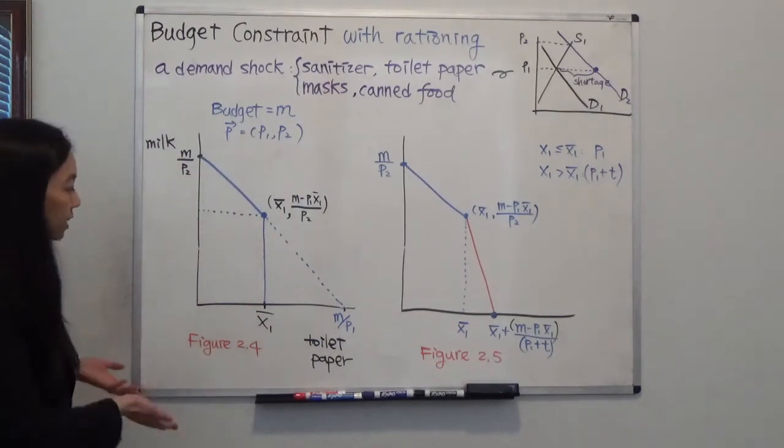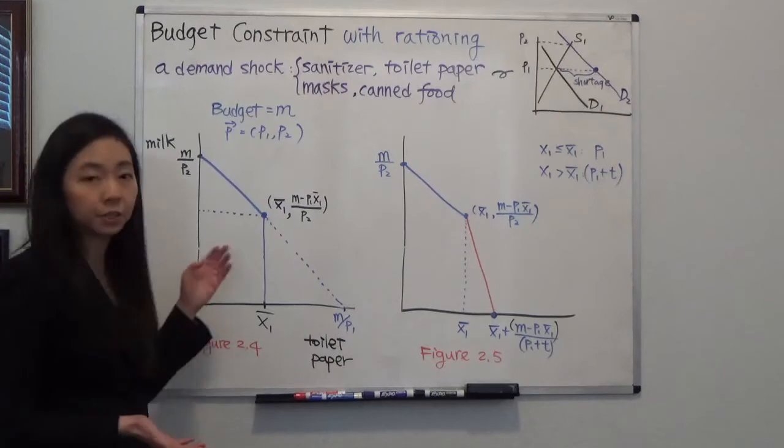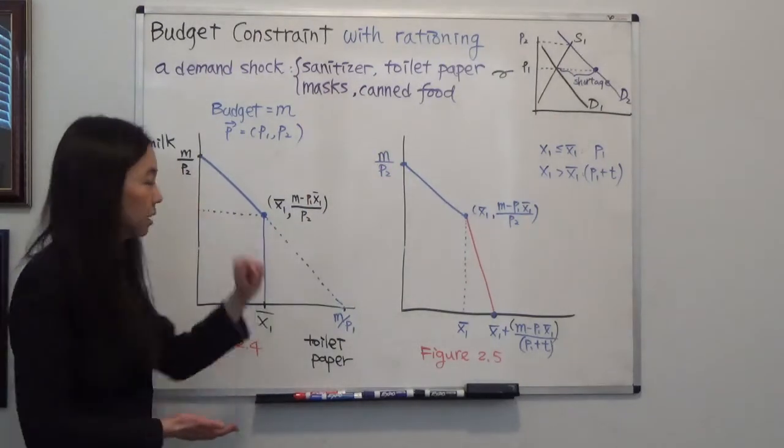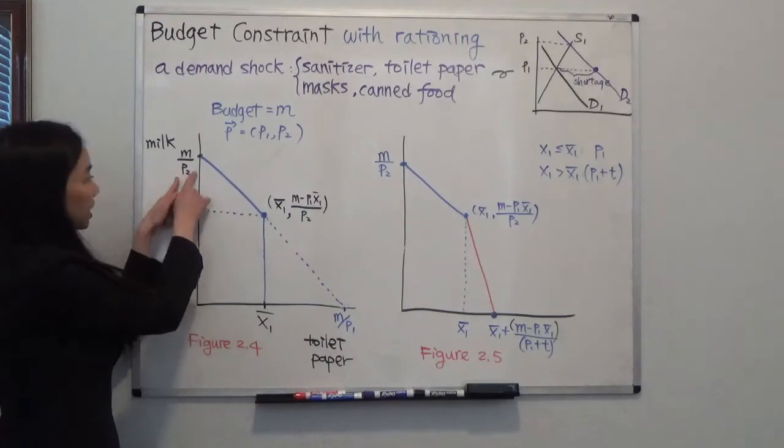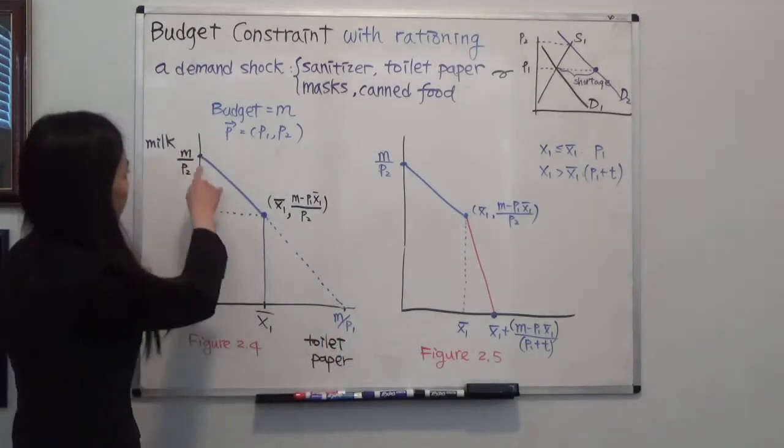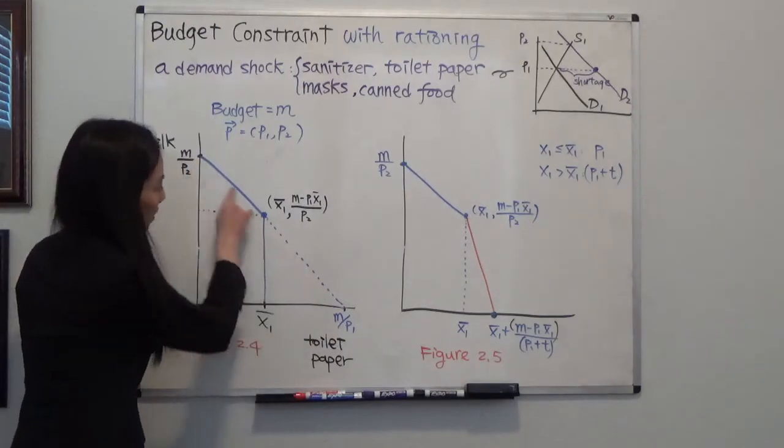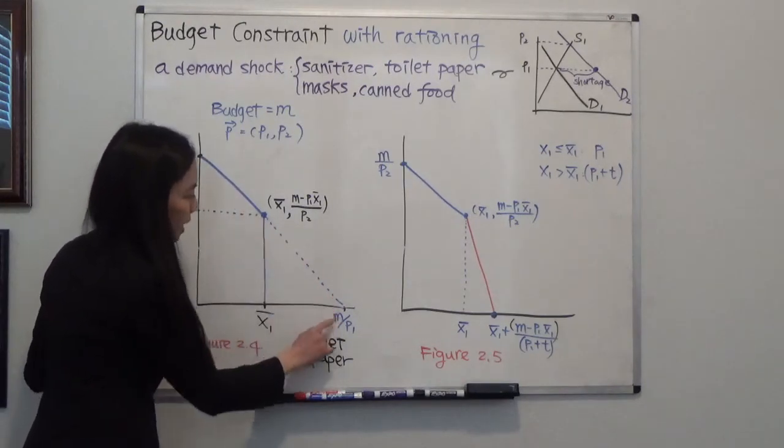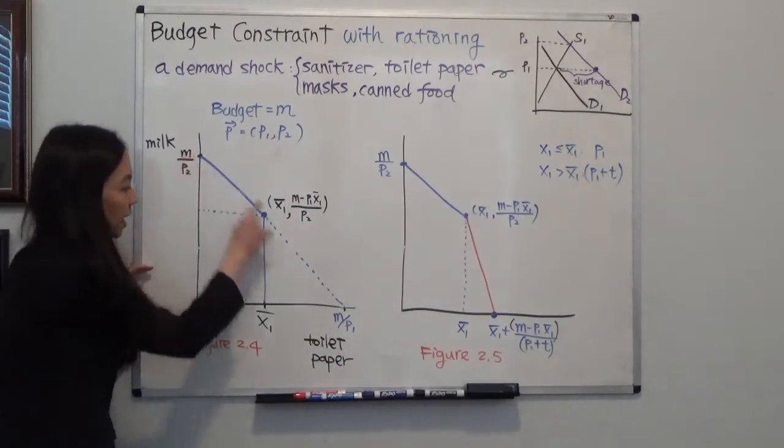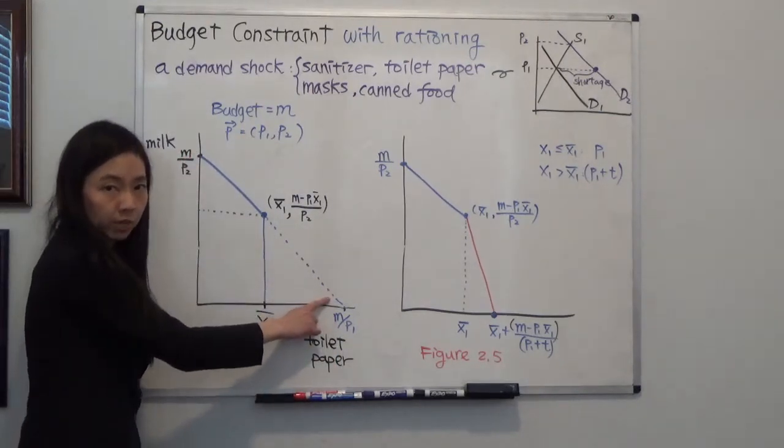So how would that change our budget constraint? Typically we know previously before the pandemic, the price of milk is P2 and the price of toilet paper is P1. Our budget constraint would just look like that. Intercept is M divided by P1 and here is M divided by P2, and that was our budget constraint.